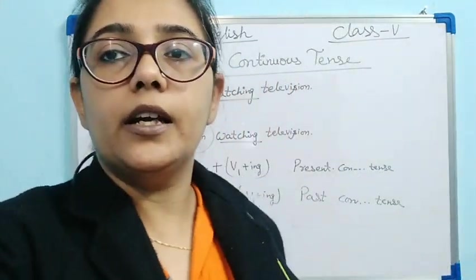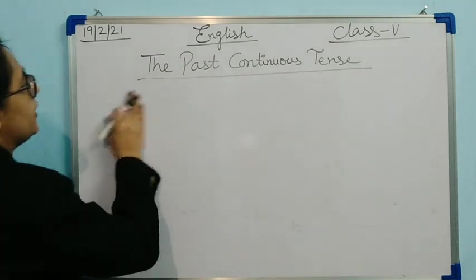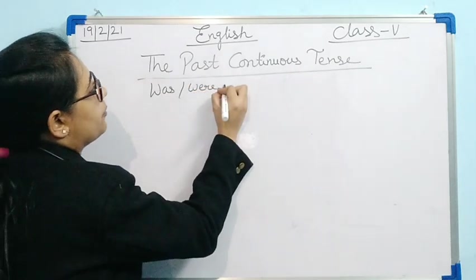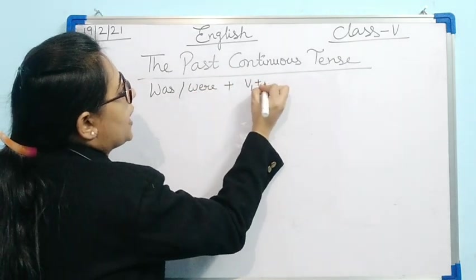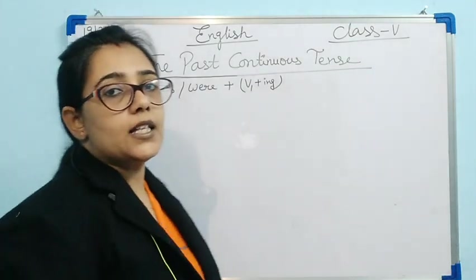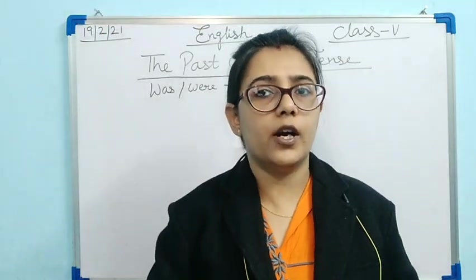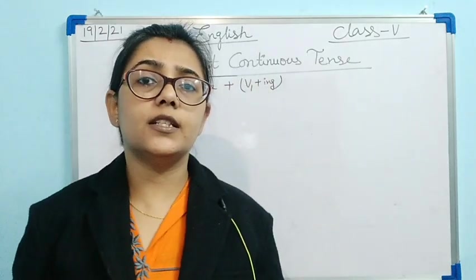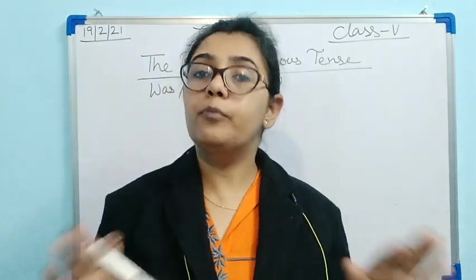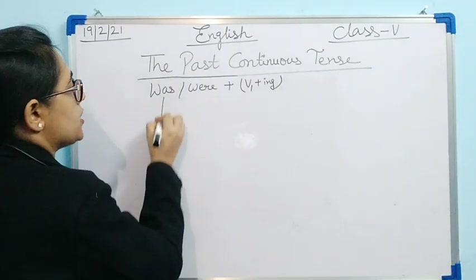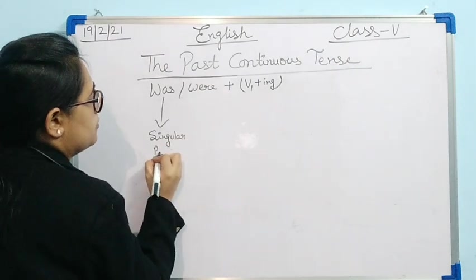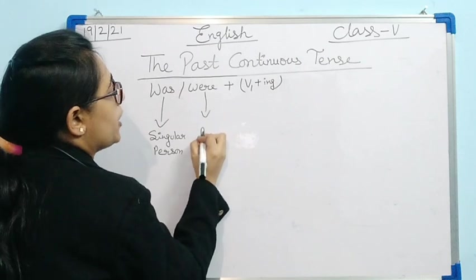Let's see more examples — let me clear the board. The formula is: was or were + verb first form + -ing. You will ask: where to use 'was' and where to use 'were'? Similarly to present continuous tense — where we use 'is' for singular, 'am' for I, and 'are' for plural — here 'was' is used for singular person and 'were' is used for plural person.